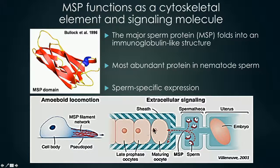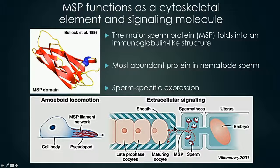MSP can be secreted into the extracellular environment where it acts as a signaling molecule and promotes oocyte maturation. So MSP has two primary functions: it acts as a cytoskeletal element and it acts as a secreted signaling molecule.